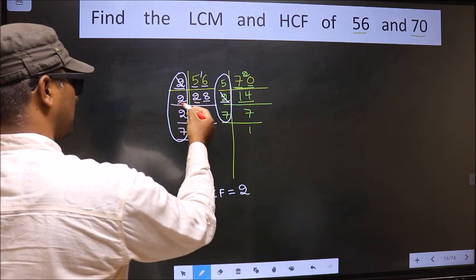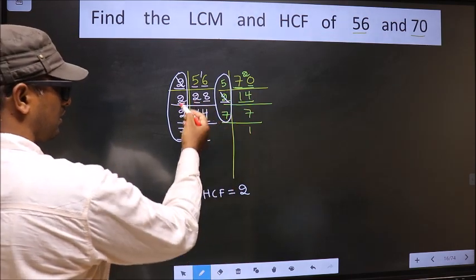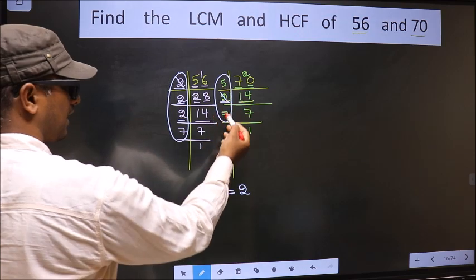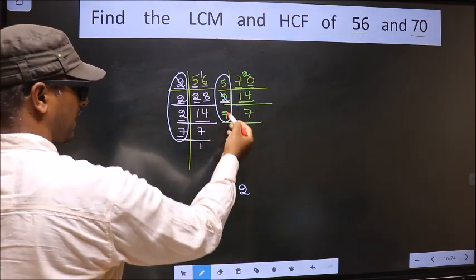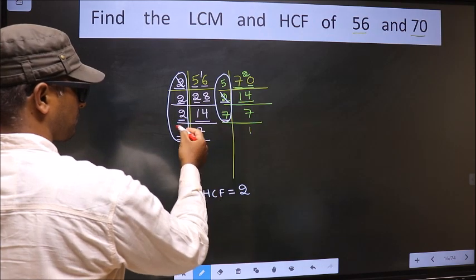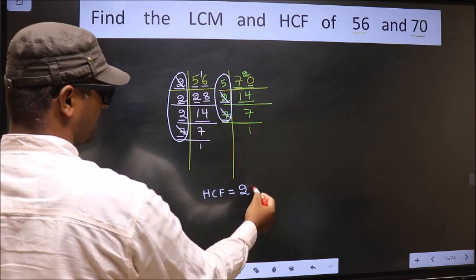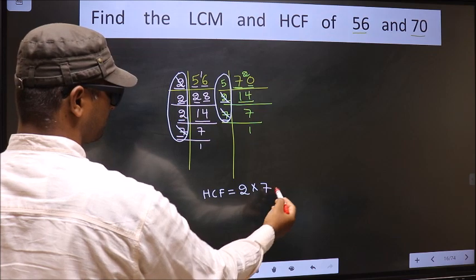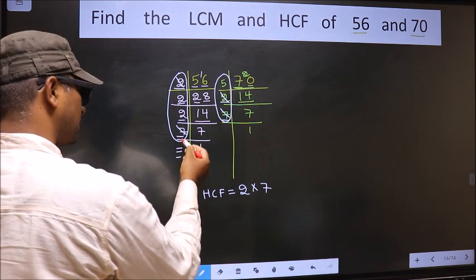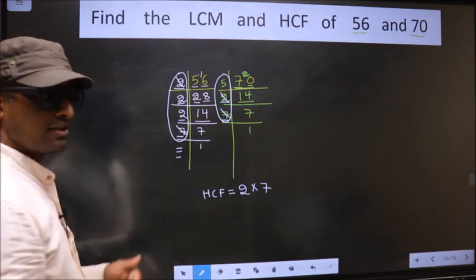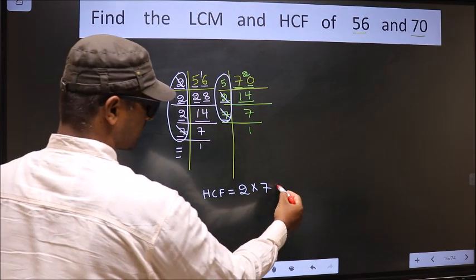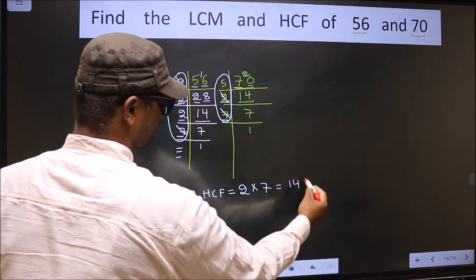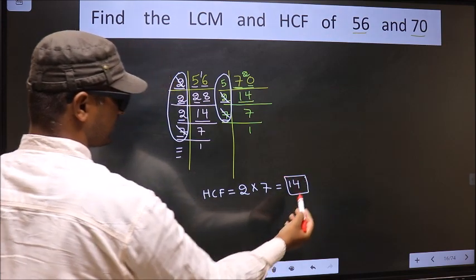Next number 2. Do we have 2 here? No. Next number 2. Do we have 2 here? No. Next number 7. Do we have 7 here? Yes. So you cut 7 and write here. No more numbers have been left. So our HCF is 2 times 7, which is 14.